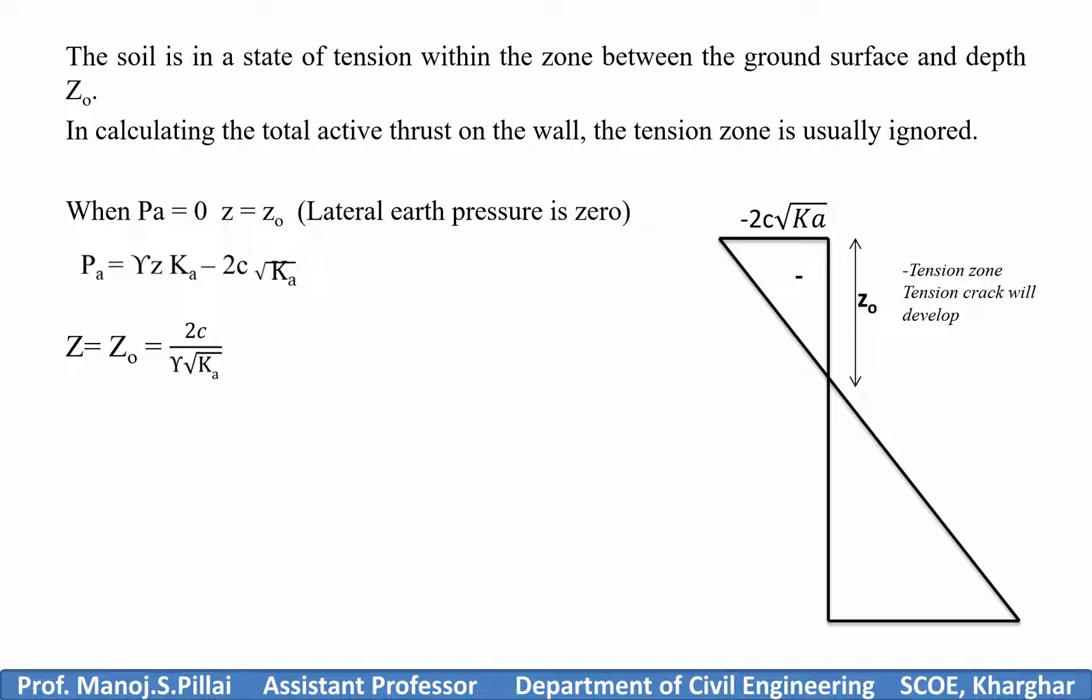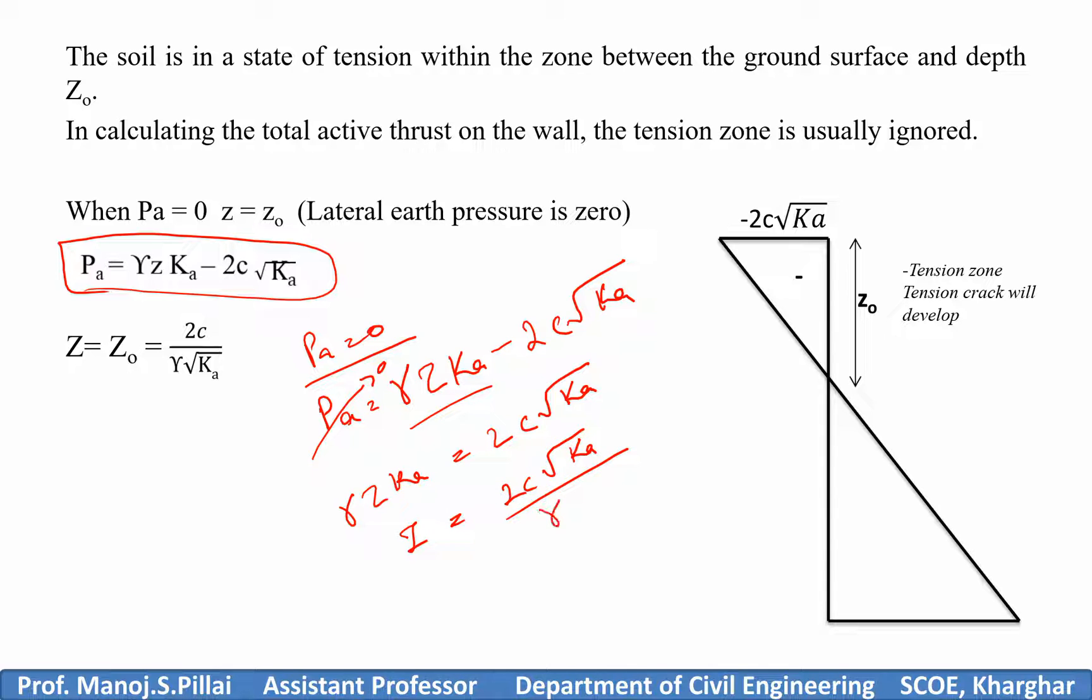Now, one thing that I want to say. In the active part itself, you have this expression. When Pa equal to zero, what do I get? Pa equals gamma Z Ka minus 2C square root of Ka. Let's take Pa equal to zero. This term comes to the other side: gamma Z Ka equals 2C square root of Ka. I need the value for Z, so Z equals 2C square root of Ka divided by gamma Ka. Multiplying by square root of Ka on both sides and dividing, I get Z equals 2C divided by gamma square root of Ka. This is my value for Z.